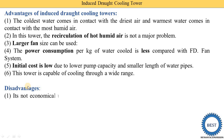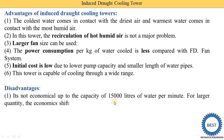Now, the disadvantages. First disadvantage: it is not economical for a capacity up to 15,000 liters of water per minute. For larger quantities, the economics shift in favor of the induced draft tower. If the cooling water required is 15,000 liters per minute or more, we use the induced draft system; if capacity is less, we use forced draft cooling towers.